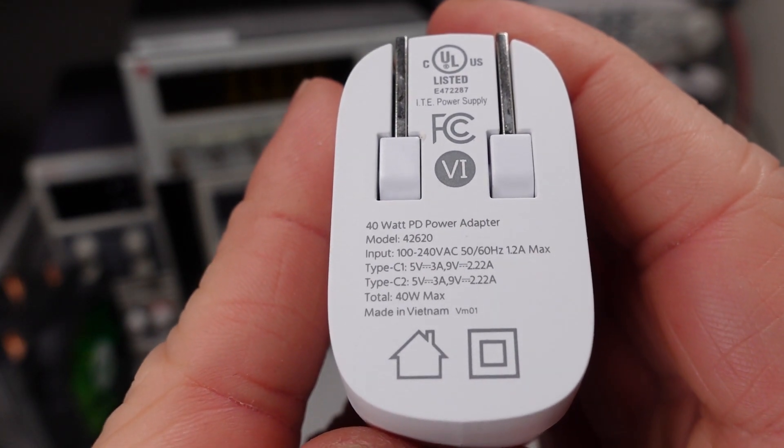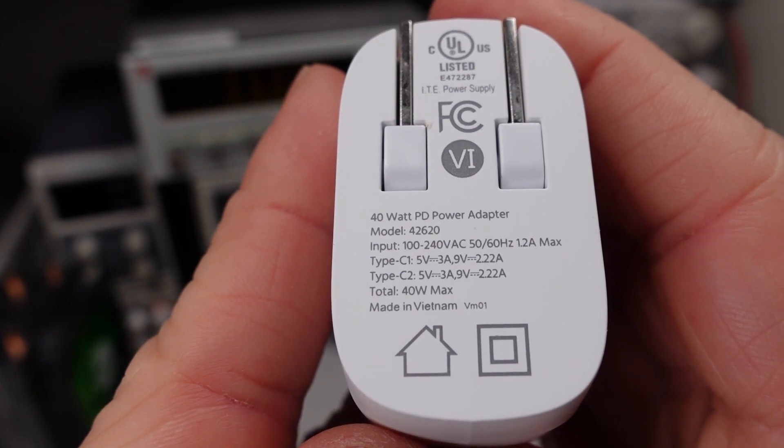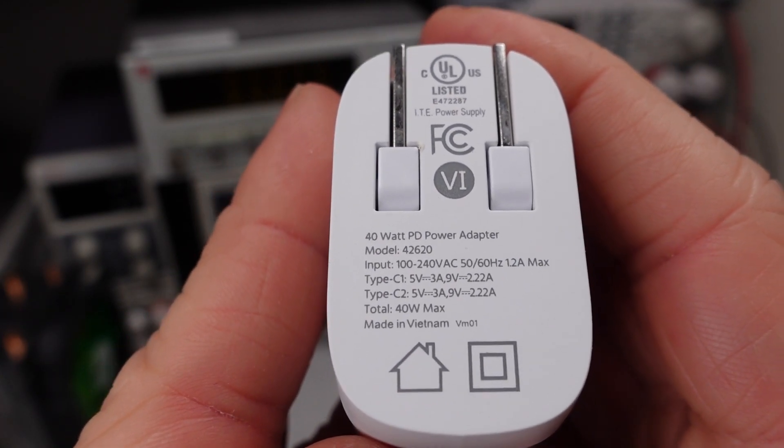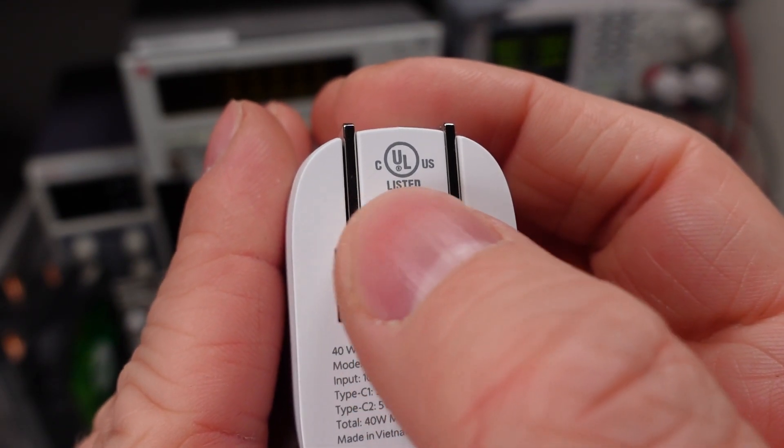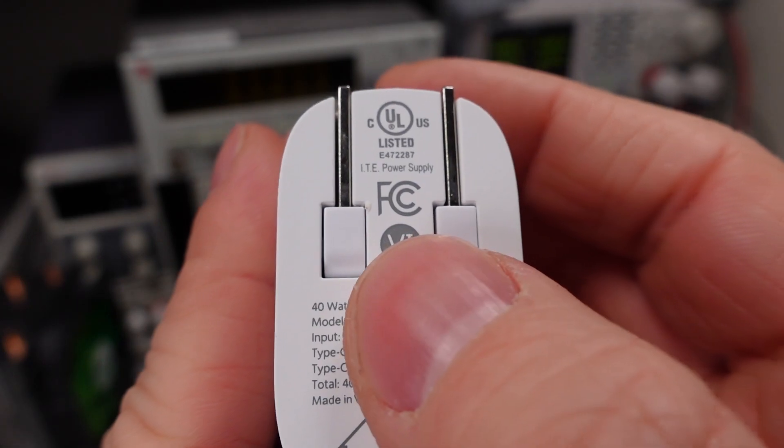Because it didn't come with any kind of manual, we're going to have to rely on this to tell us what it can do for output. So it looks like just 5 volts and 9 volts. You can see that model number on there, 42620. You can see the UL safety listing up here with the Canada and the U.S. It's got the number on there. That's good. Level 6 for efficiency.